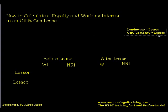We're going to look at what the royalty calculation and working interest calculation would be in an oil and gas lease before we took the lease, and then after we took the lease. This all depends on what the royalty fraction is. The working interest owner is the person that pays the expenses — who is responsible for the expenses. The net revenue interest is what the revenues are.